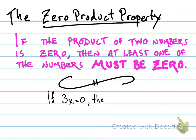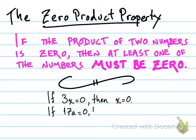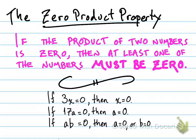Here's a simple example. If three times x equals zero, then x has to be zero — there's no other possible solution. Or 17a equals zero means a equals zero. Also, if a times b equals zero, then a equals zero or b equals zero, because sometimes we don't know either one of the numbers.